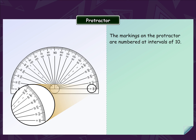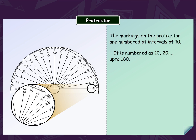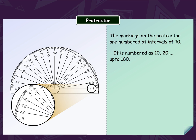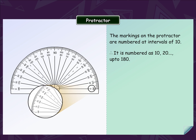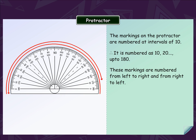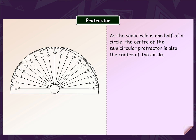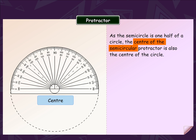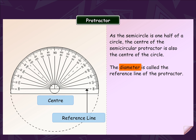The markings on the protractor are numbered at intervals of 10. Therefore, it is numbered as 10, 20, and so on up to 180. These markings are numbered from left to right and from right to left. As the semicircle is one half of a circle, the centre of the semicircular protractor is also the centre of the circle. The diameter is called the reference line of the protractor.